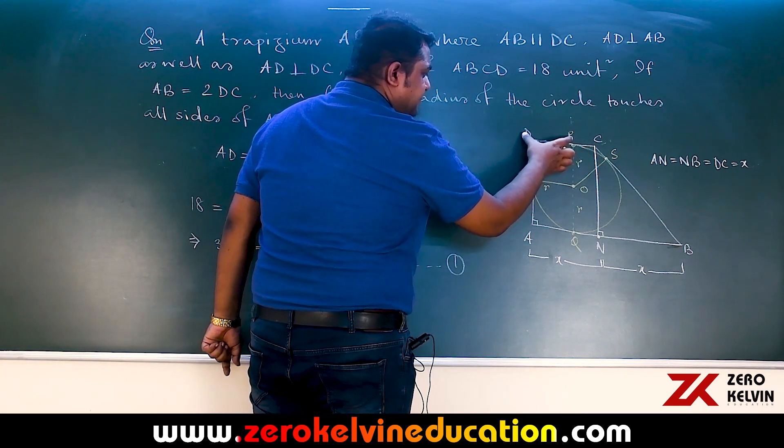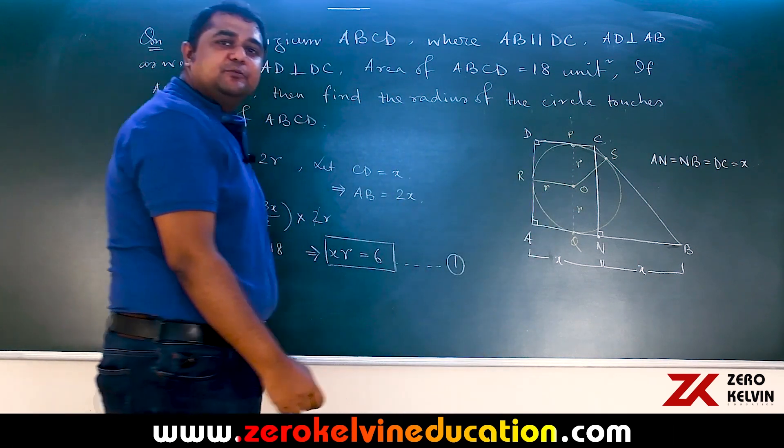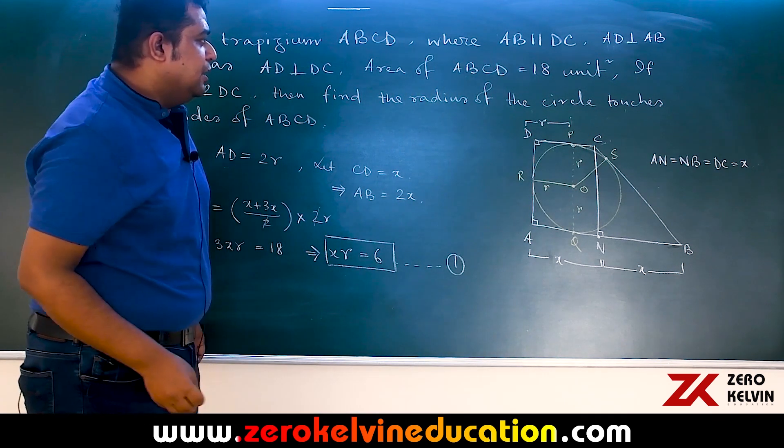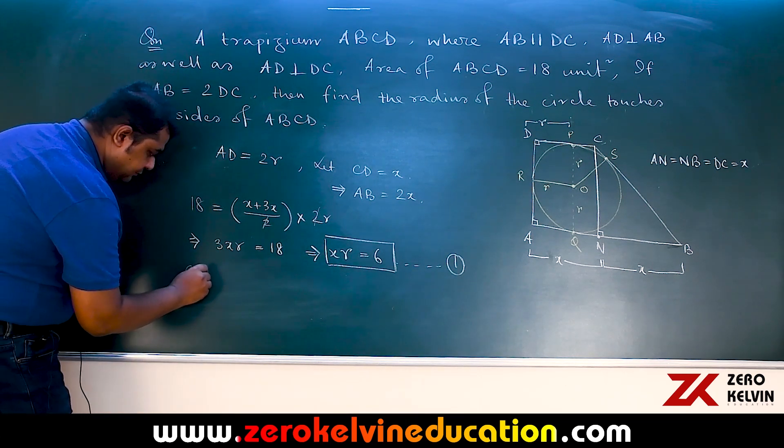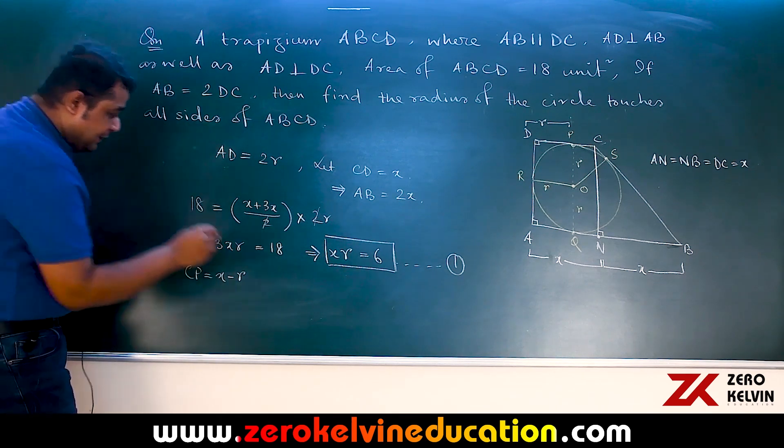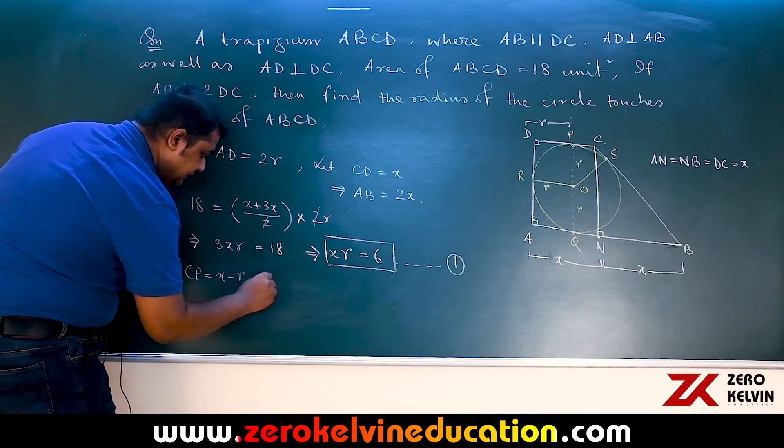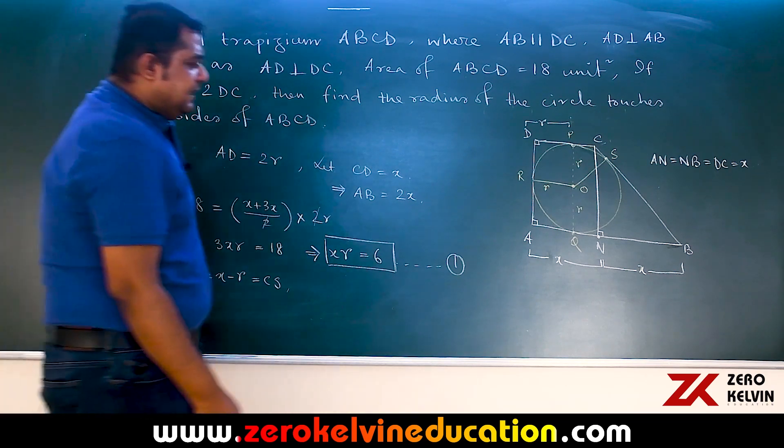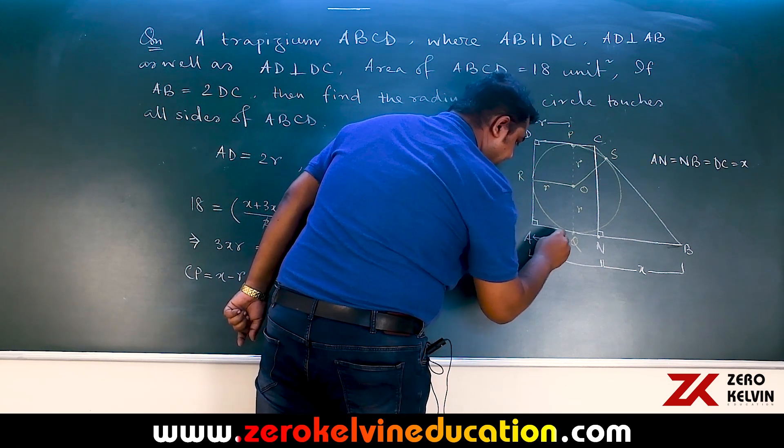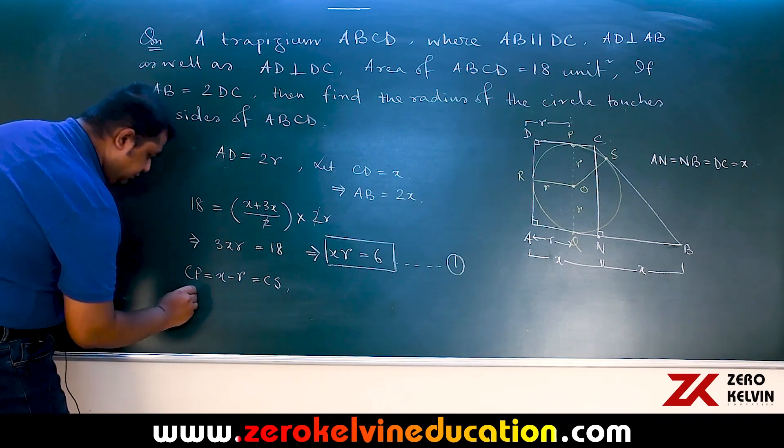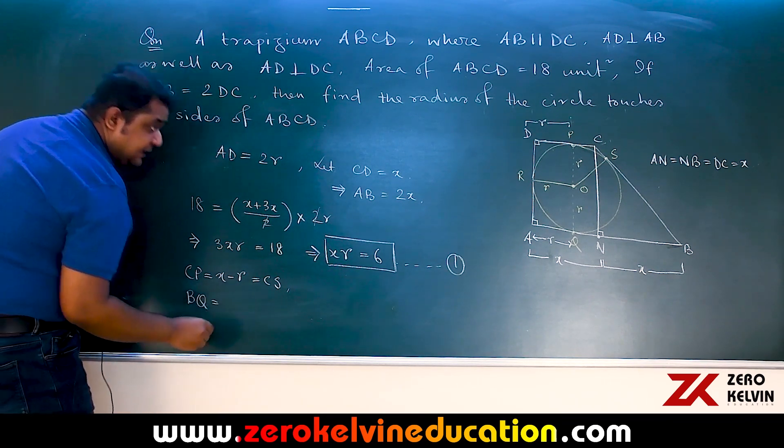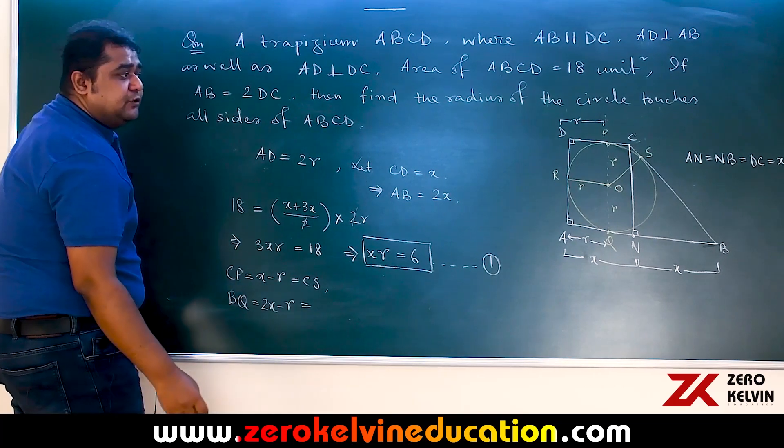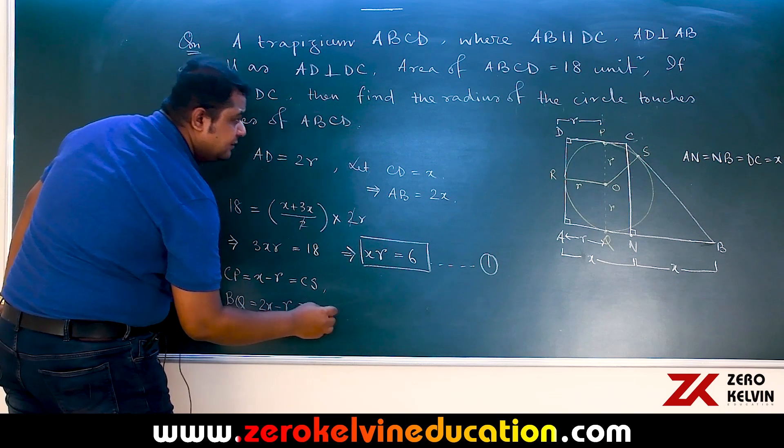Now CD was x, DP equals R is the radius of the circle. So we can mark DP as radius of the circle. CP can be marked as x minus R then tangent length CS will also possess equal length. On a similar note we can also mark AQ as R and hence BQ that is AB minus AQ is 2x minus R and the equal length will be found through the other tangent drawn from B that is BS.